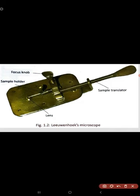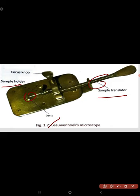This figure is Leeuwenhoek's Microscope. This one is Simple Translator. This one is Lens. Simple Holder is this one, and Focus Knob is this part.